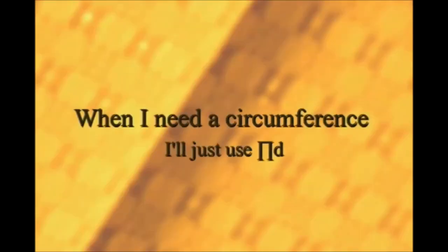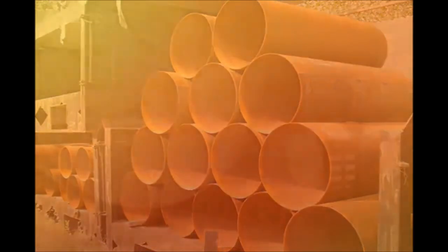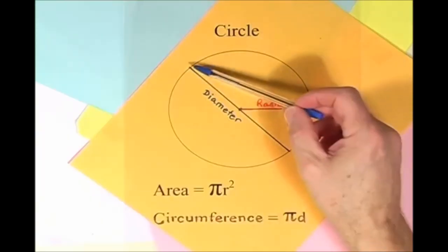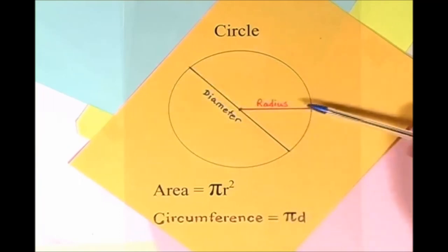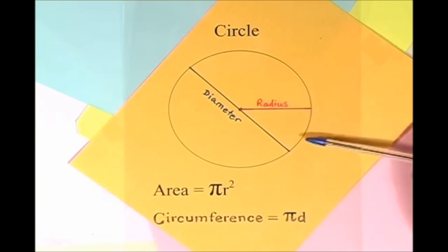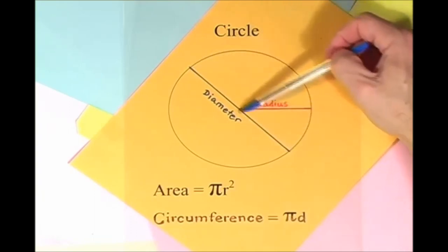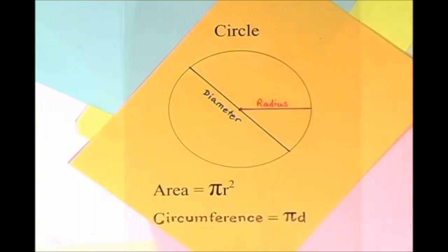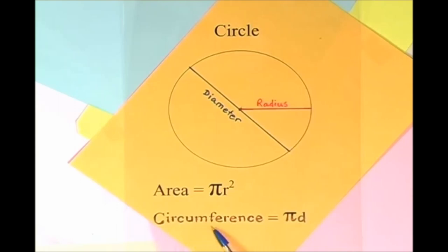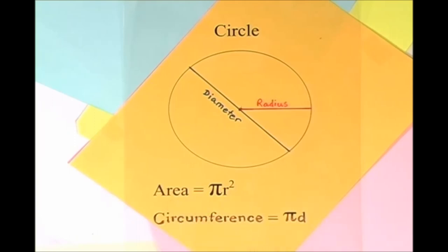Pi r squared sounds like area to me, when I need a circumference, I'll just use pi d. Here is a circle, it knows how to get around. It has a radius from center to rim. And its diameter's a line that goes from side to side while passing through the center, now isn't that simple. Pi r squared sounds like area to me, I'll just use pi d.